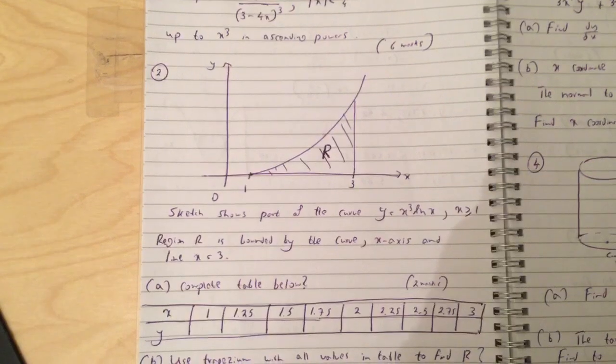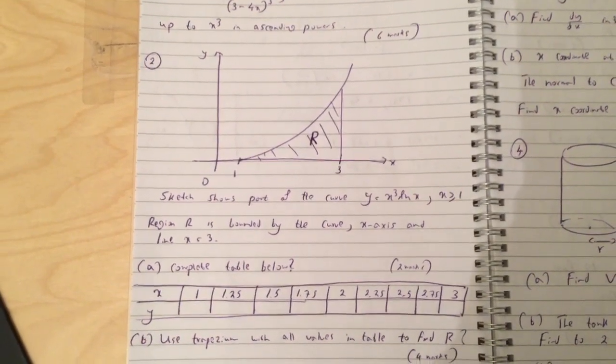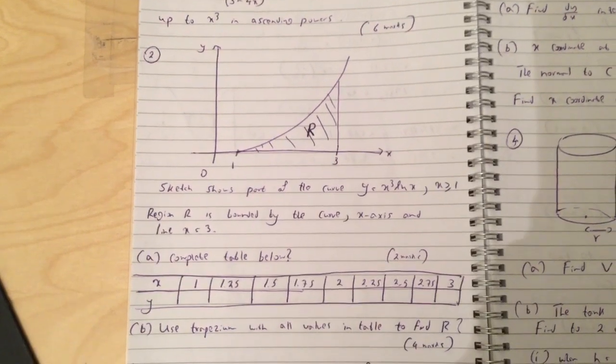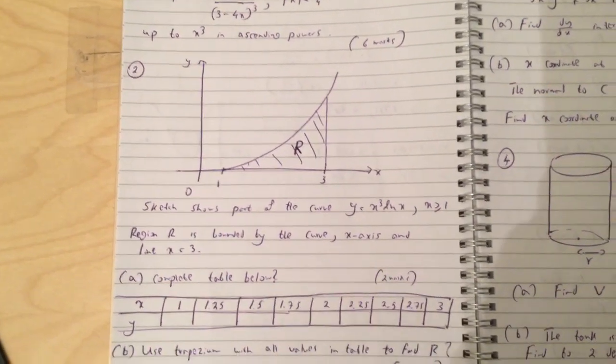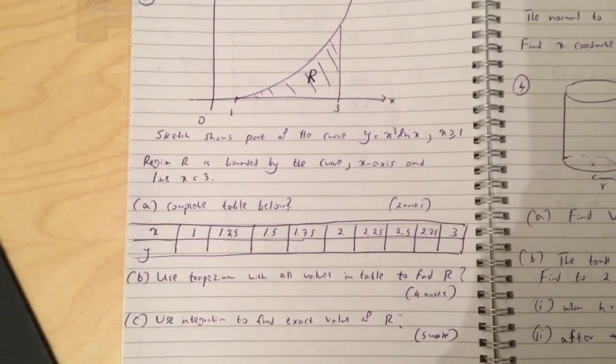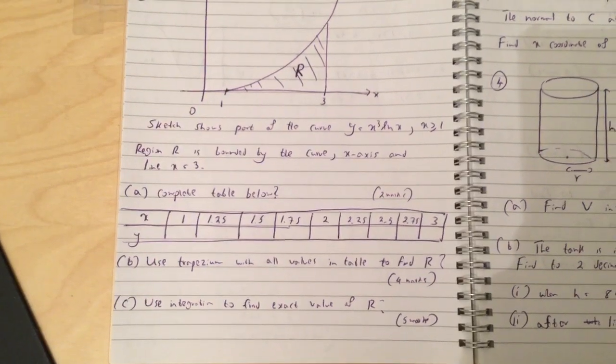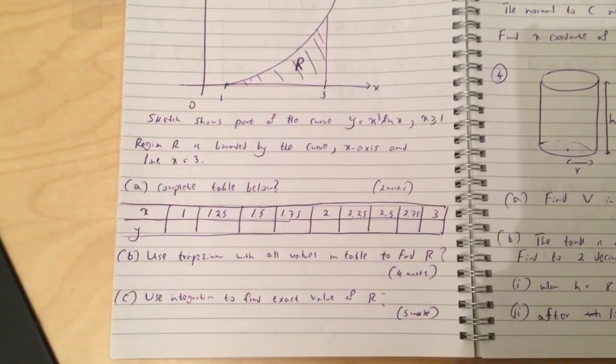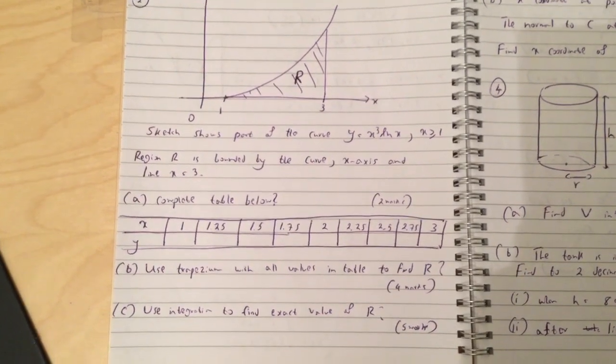Question 2: Sketch shows part of the curve y equals x cubed ln x where x is greater than or equal to 1. Region R is bounded by the curve, x axis, and line x equals 3. Complete the table below, then use trapezium rule with values in table to find R, and then use integration to find exact value of R.